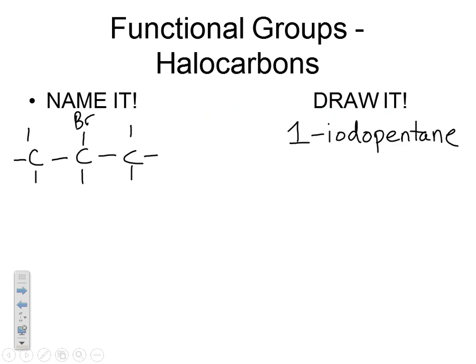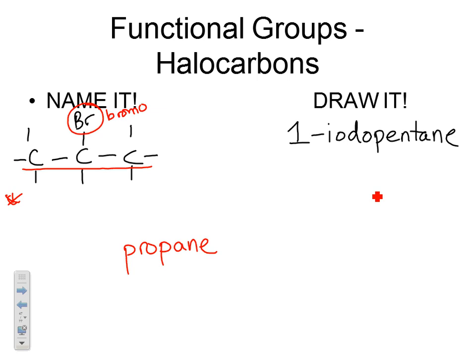Naming halocarbons — we've already seen these before, this is a review. To name the compound on the left, find the longest carbon chain, which is 3, so that's prop-. The carbons are all single bonded so it's -ane. The substituent is a halogen, so it's named bromo. Numbering the carbon chain so the substituent is on the smallest number, the bromo is on the second carbon, so this is 2-bromopropane.